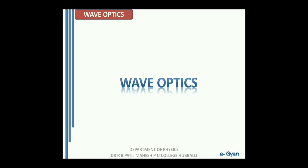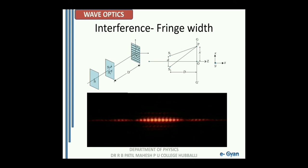This is a theoretical lecture as it is a derivation, so please have patience and go through the derivation. On this slide we have three pictures. The first picture is the Young's double slit experimental setup in which we have a source, the slits S1 and S2, and we have the interference pattern on the screen. Then we have the picture we are going to use to derive the fringe width, and we have a third picture as well.